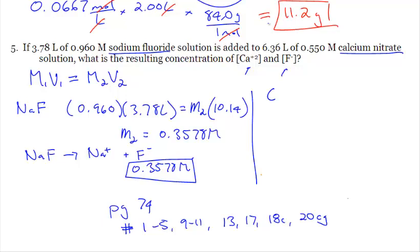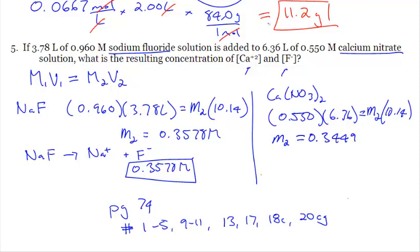To do the same thing for calcium nitrate. That is 0.550 times 6.36 liters. Solving for your new molarity. And the volume after mixing would be the same 10.14. That divided all out gives you a new molarity of 0.3449 molar. This thing dissociated is Ca(NO3)2. Gives me 1 Ca+2 and 2 NO3-. If the concentration of Ca(NO3)2 is 0.3449, there's a 1 to 1 ratio. So this is also 0.3449.